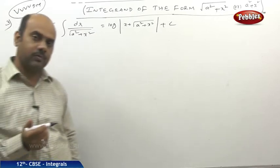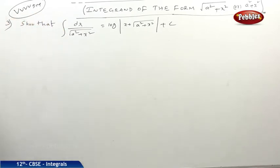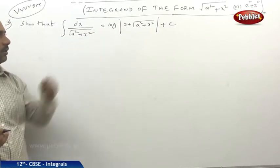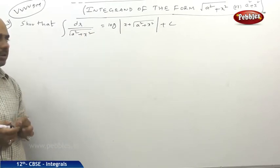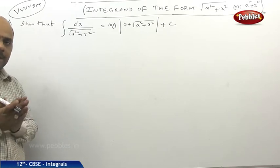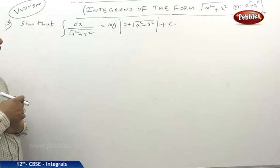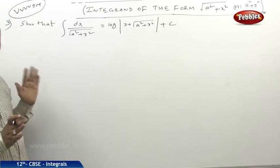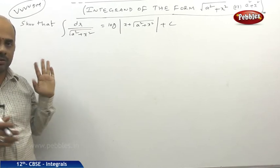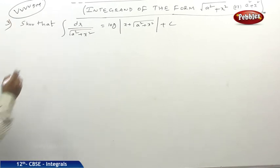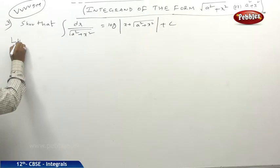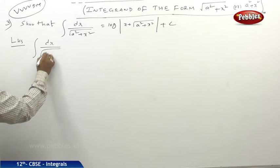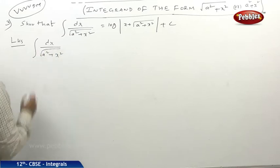Now we shall see one long answer question. Show that the integral of dx by under root of (a² plus x²) equals log mod (x plus under root of (a² plus x²)) plus c. This should be remembered as a formula for competitive examinations, and in CBSC sometimes this kind of application will also be given. Taking LHS: integral of dx by under root of (a² plus x²).